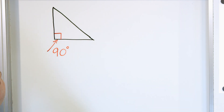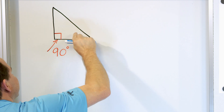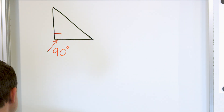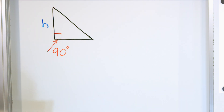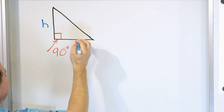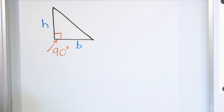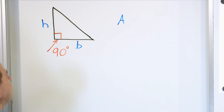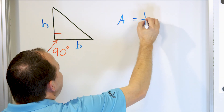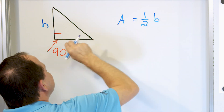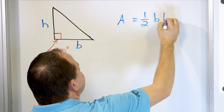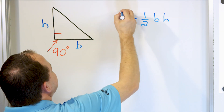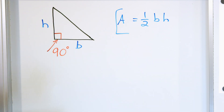This triangle is going to have some area — if we paint all the inside of the triangle, we calculate the surface area inside. Let's say this triangle has a height H and a base B. The formula for the area of a right triangle is one-half times the base of the triangle times the height of the triangle — base times height. This is what we're going to use to solve every one of these problems.